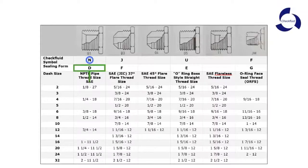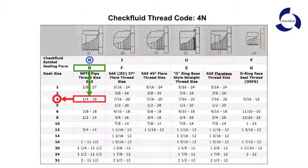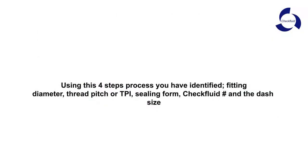Step 4: use the information from the previous step to locate the dash size within the thread guide. Using this 4-step process, you have now identified the fastener diameter, thread pitch or TPI, sealing form, Check Fluid ID number, and the dash size.